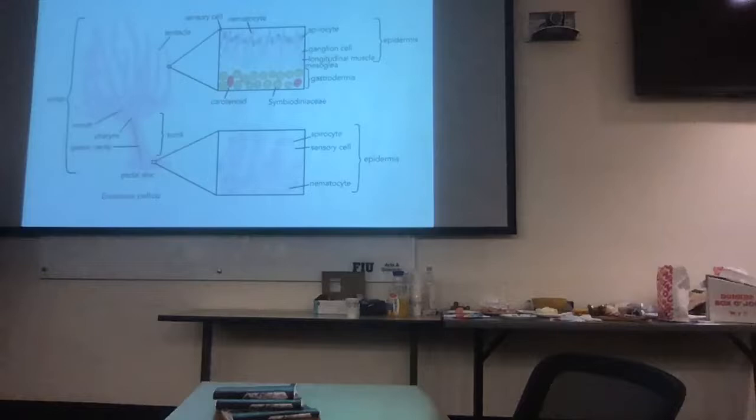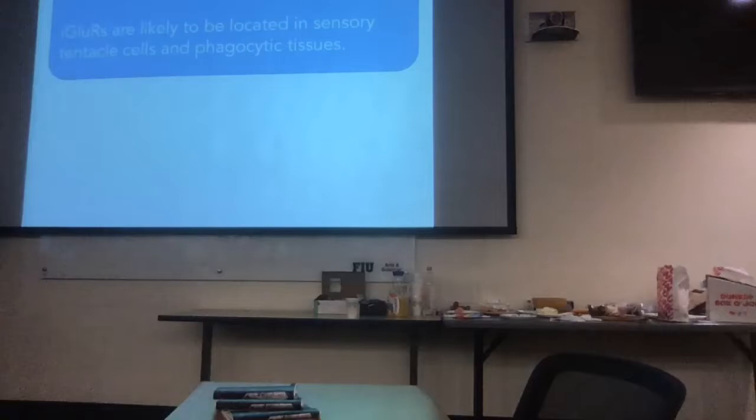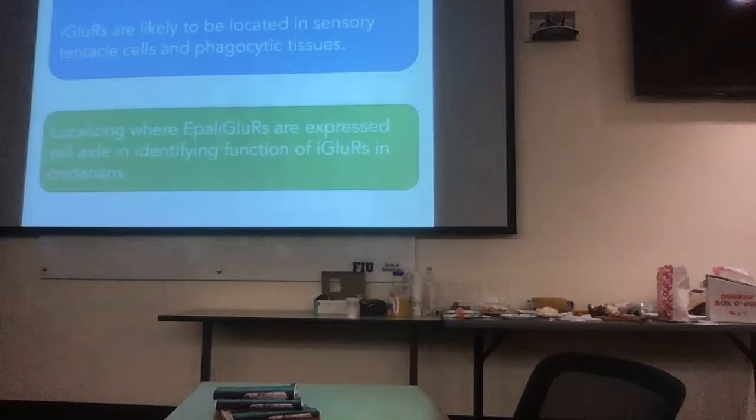I hypothesize that iGluRs are likely to be located in sensory tentacle cells and phagocytic tissues because this is where the organism is going to be interacting with the external environment. Localizing where these are found will aid in identifying the function of cnidarian iGluRs because we are identifying the cells they're associated with, and those cells have particular functions.